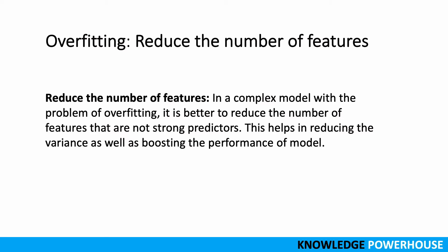Another option to reduce overfitting is to reduce the number of features. With a complex model, overfitting occurs because the model tries to remember all features, even unimportant ones, and predicts very well on the training dataset. If we reduce the number of features, the model becomes simpler, variance is reduced, and performance can be boosted. Fewer features means the model is simpler and relies on specific features to make predictions, reducing overfitting.